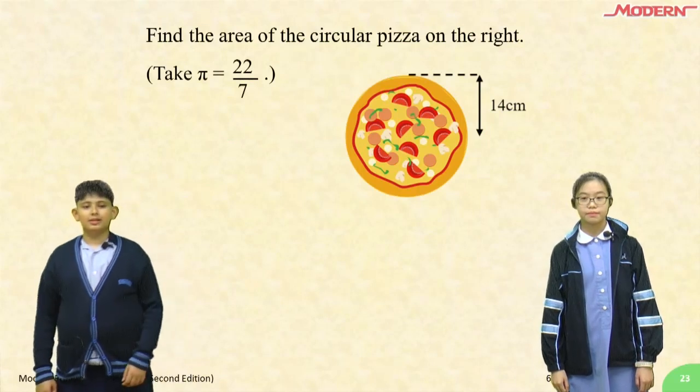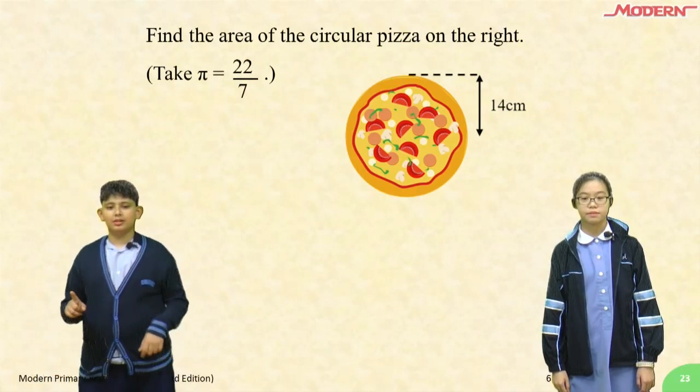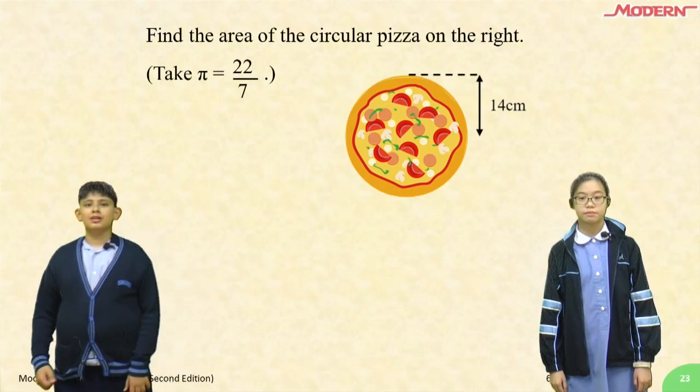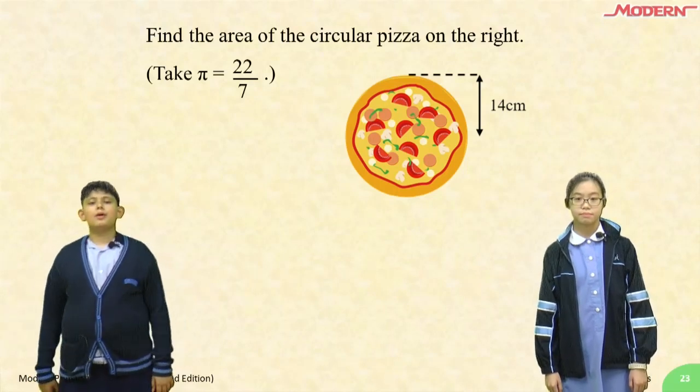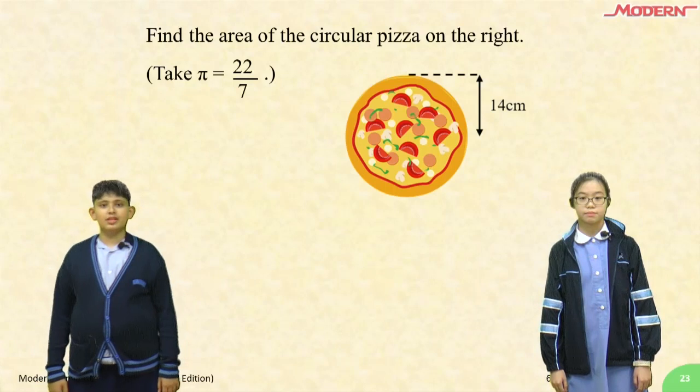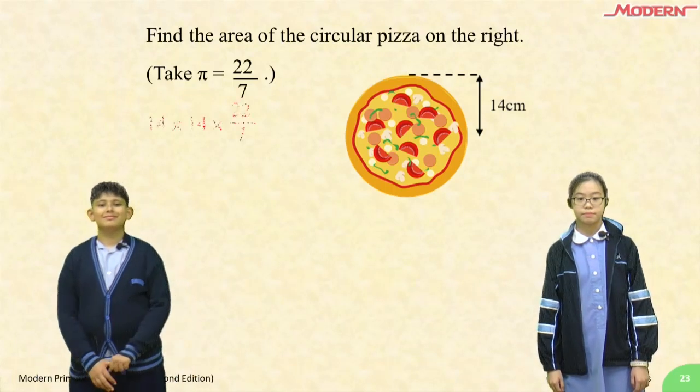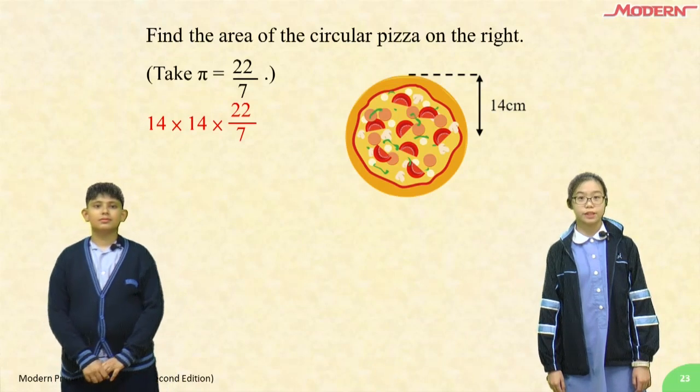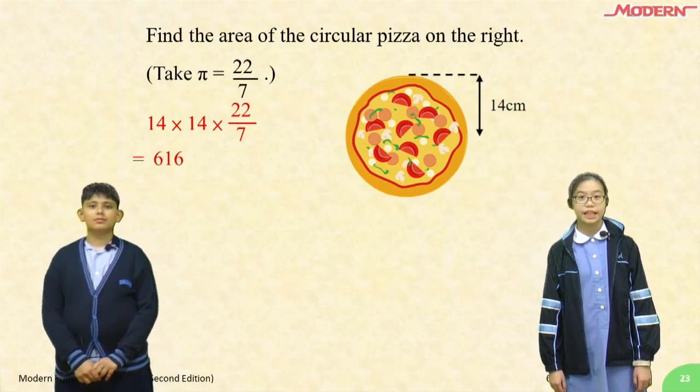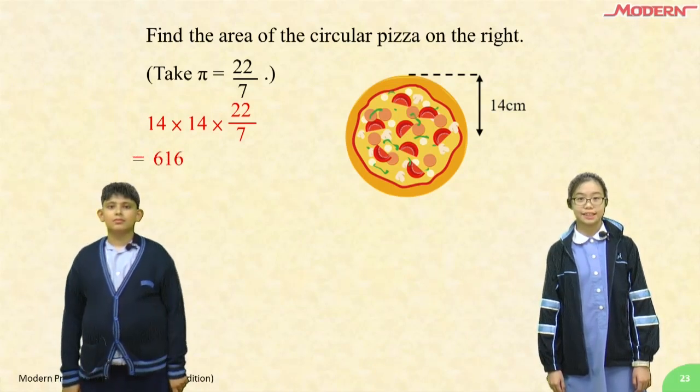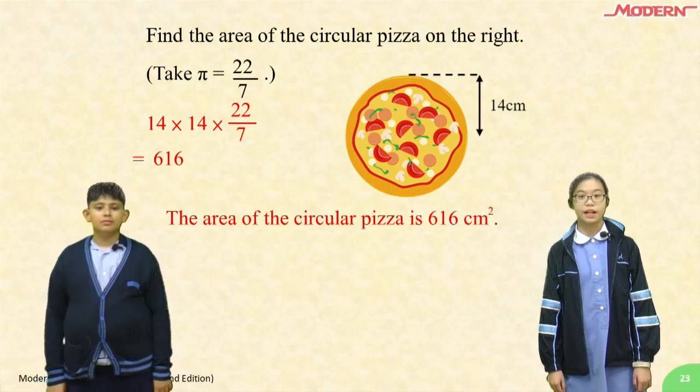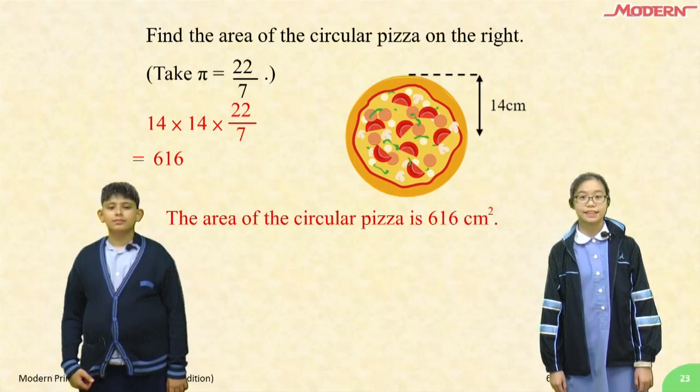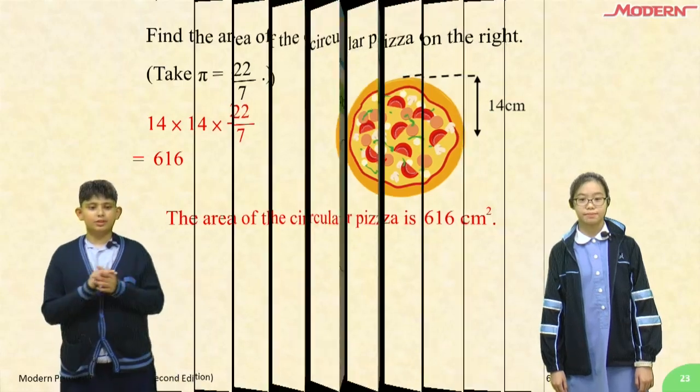Okay, let's go back to your first question. Find the area of the circular pizza on the right. Take pi as 22 over 7. 14 times 14 times 22 over 7 equals 616. The area of the circular pizza is 616 centimeters squared. Good job.